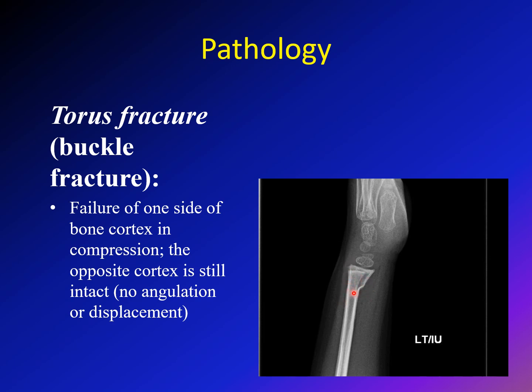Because it failed in compression and the other cortex is intact, it's a very stable injury. Stable means it does not move and it can take some stresses on the extremity. There will be pain, but there is no significant weakness of the bone structure. So torus fracture: one cortex fails in compression, the other cortex is intact. The other name for it is buckle fracture.